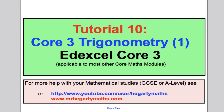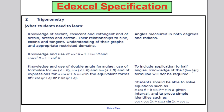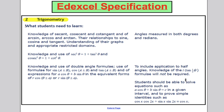Welcome to tutorial 10 on Core 3 Trigonometry as it appears in the Edexcel Core 3 Maths A Level course. We're going to start by taking a look at what Edexcel says we need to know. We're in section 2 on trigonometry, and in this particular tutorial we're going to talk about secant, cosecant and cotangent, their relationship to sine, cosine and tangent, and understand their graphs and appropriate domains. Angles can be measured in both degrees and radians, so look out for what the particular question is asking you.